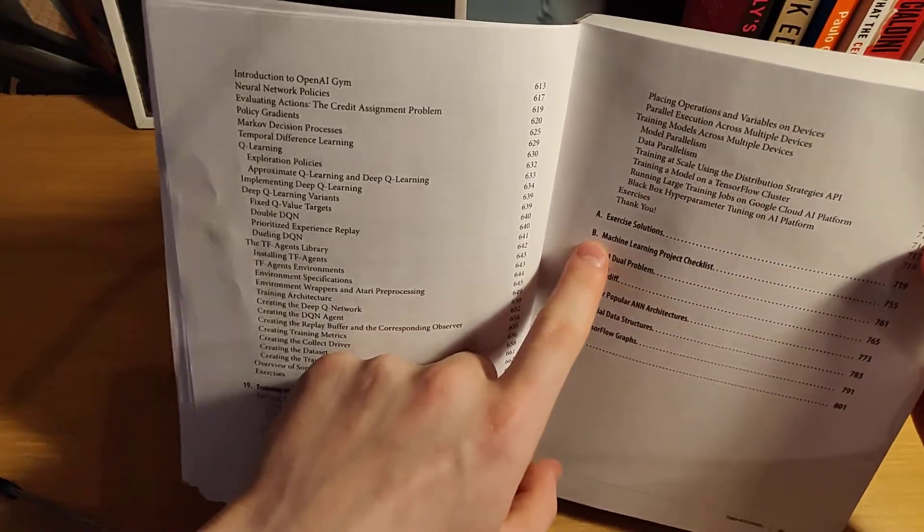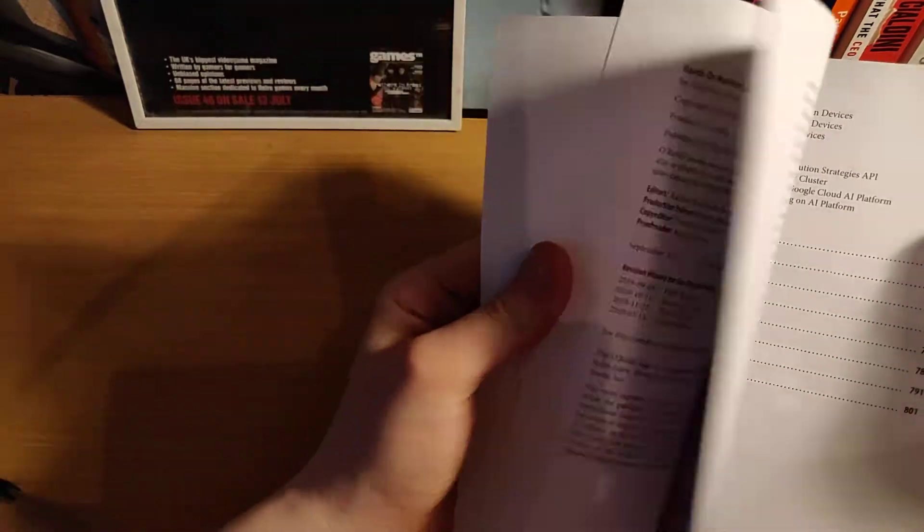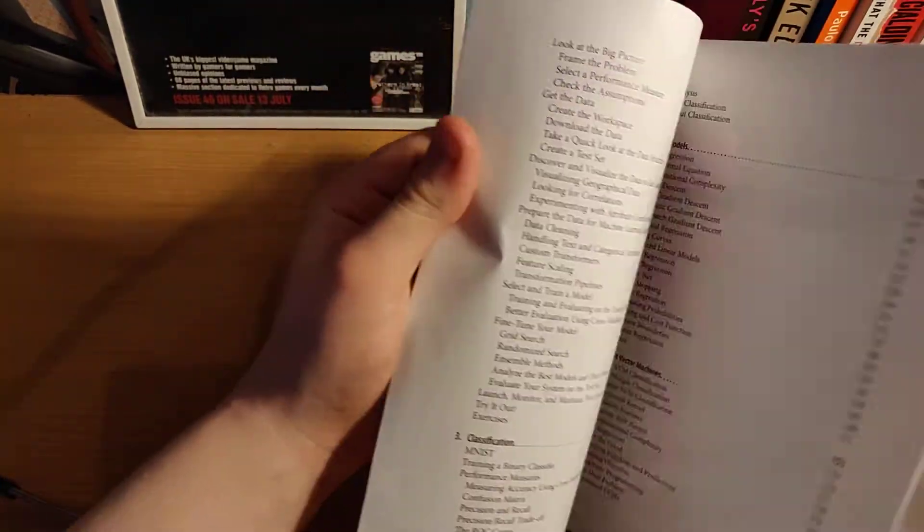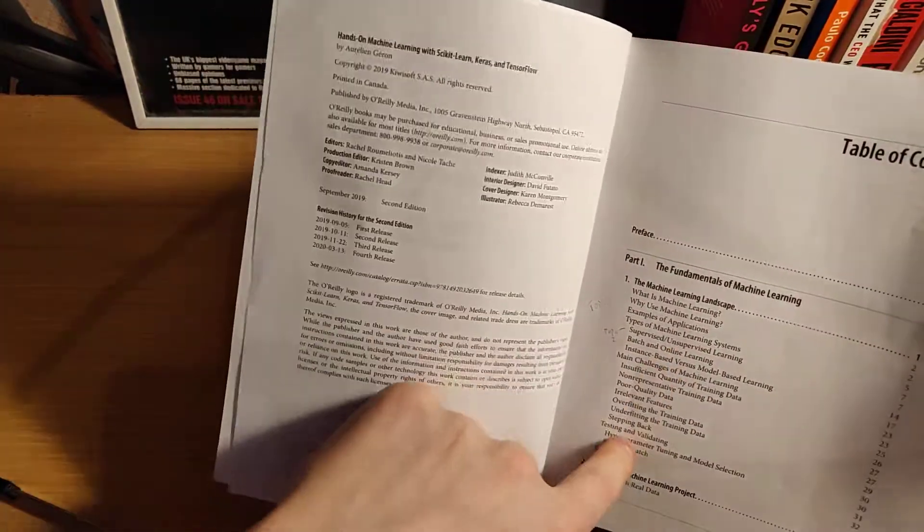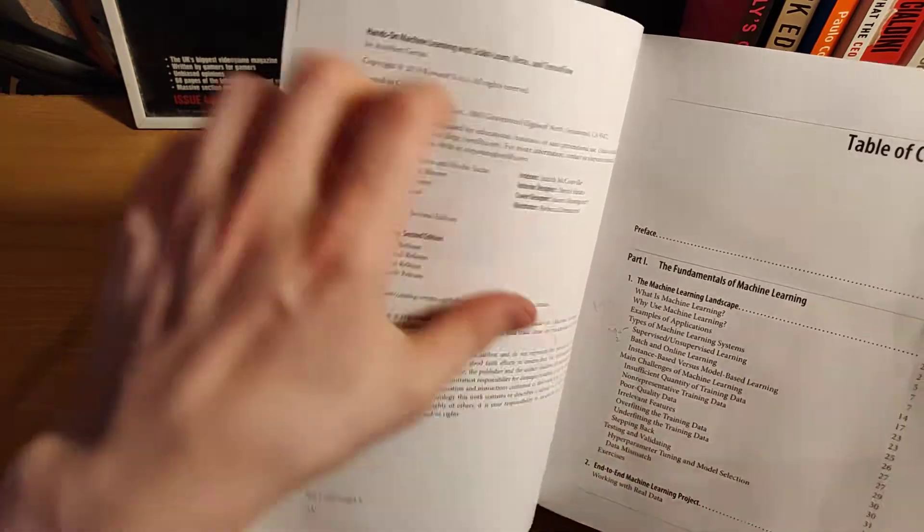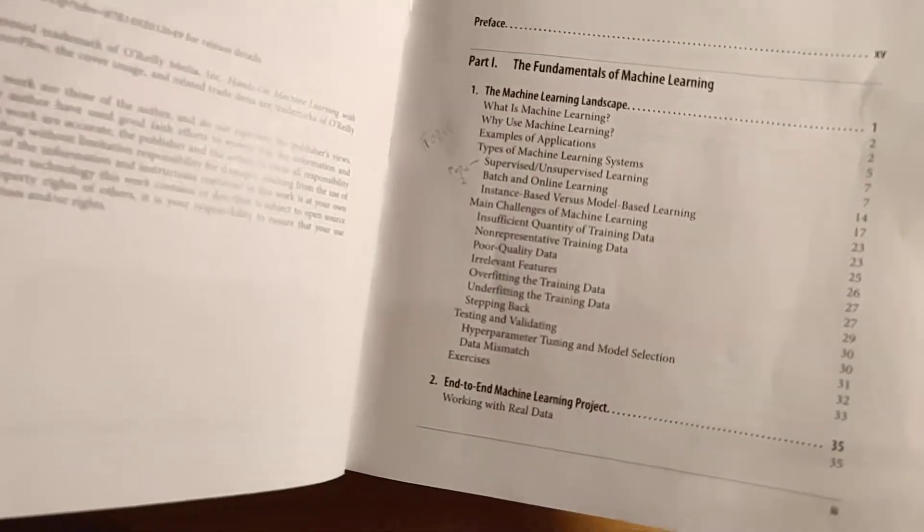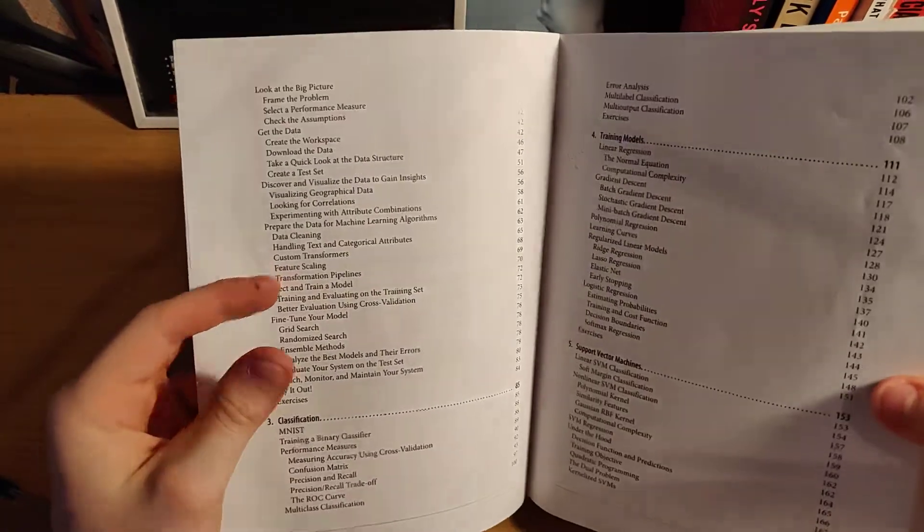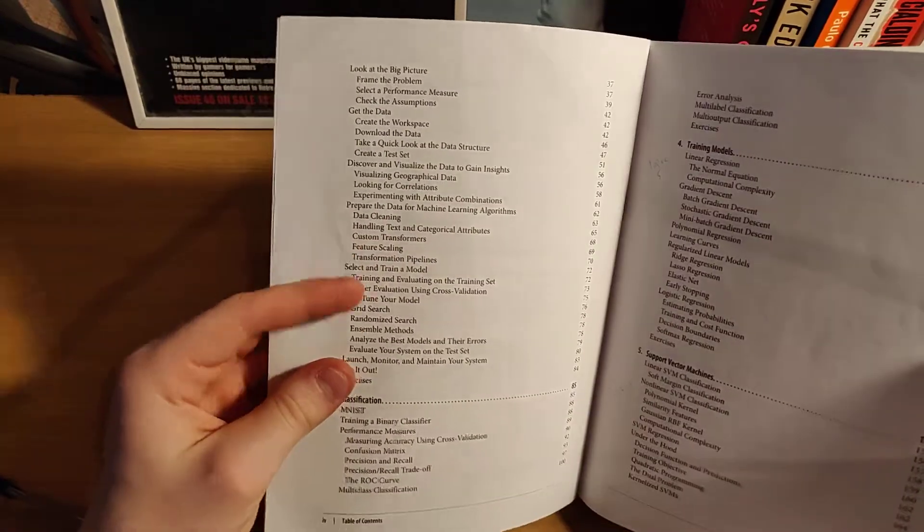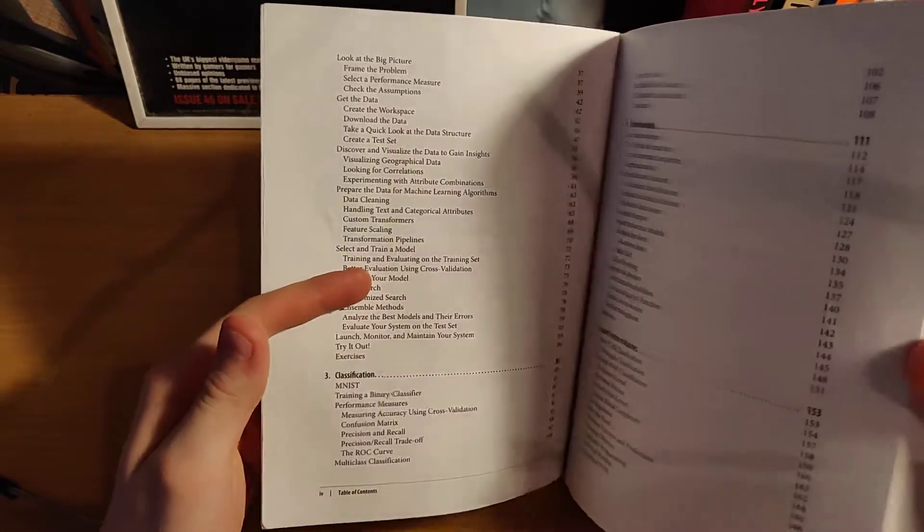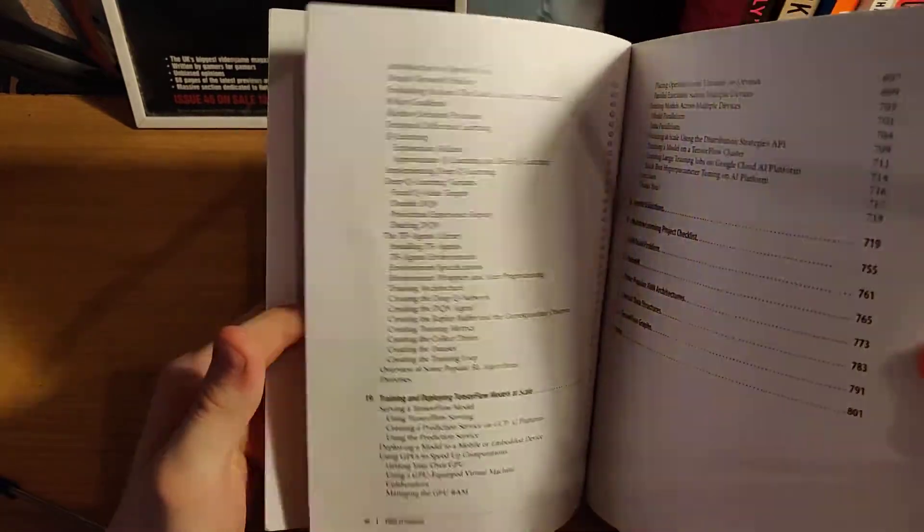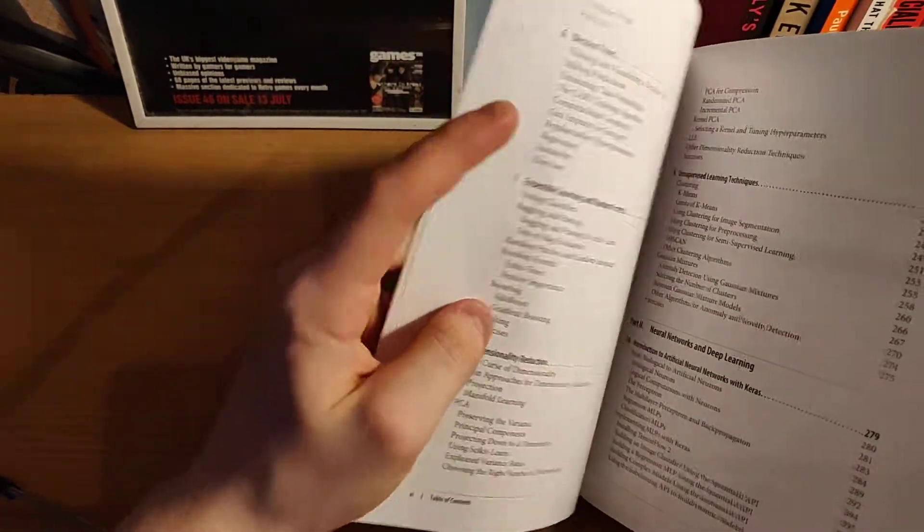And then exercise solutions. So after each chapter or sub-chapter, there are exercises which you can do, they ask you questions or ask you to do something, and that's how you learn. Typically you will just read the chapter and then do the exercises.